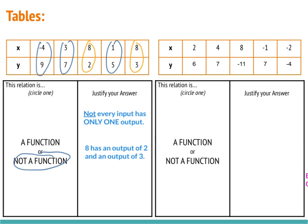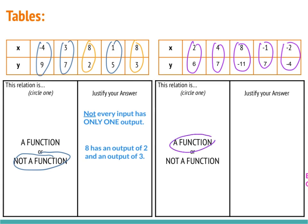Looking at our next table, we can see that 2 has a 6, 4 goes with 7, 8 goes with negative 11, negative 1 goes with 7, and negative 2 goes with 4. All the x's have only one y, so this is going to be a function. We justify our answer by saying that every input has only one output.